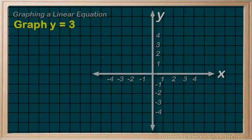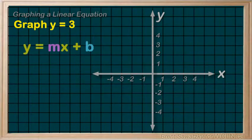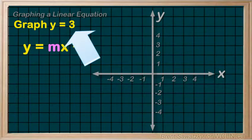One more. Let's graph y equals three. Now this one's a bit confusing in that we don't have a variable x anywhere. So that makes it hard to tell: what is the three, our m or our b?